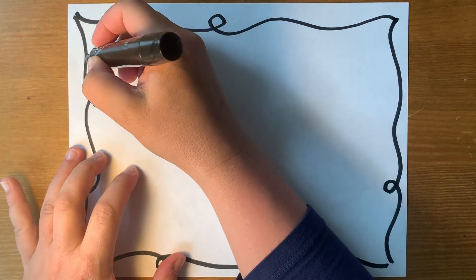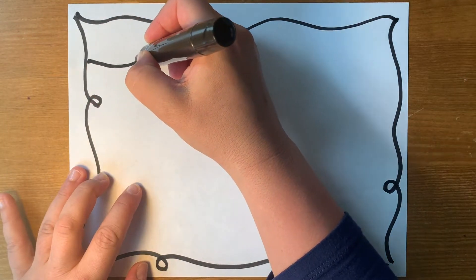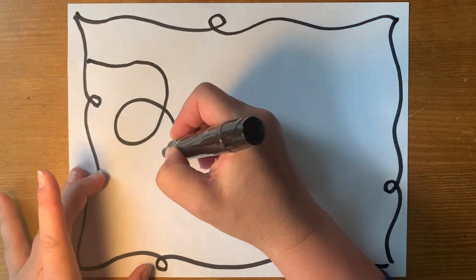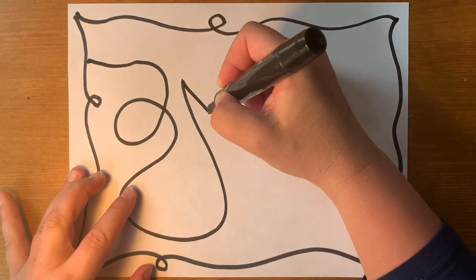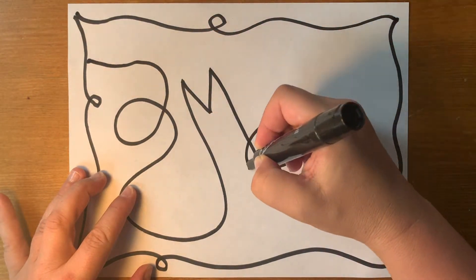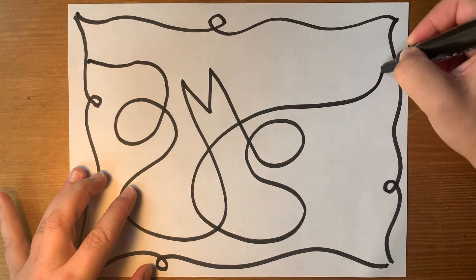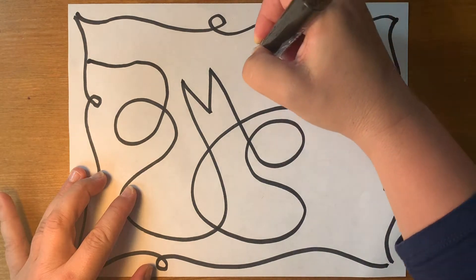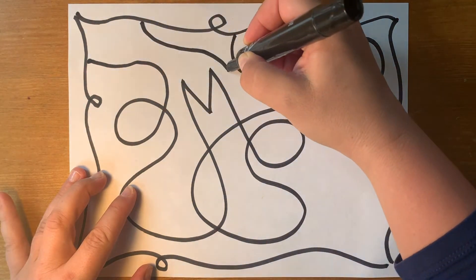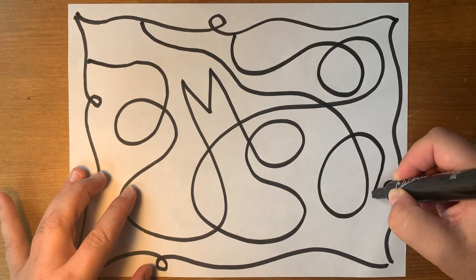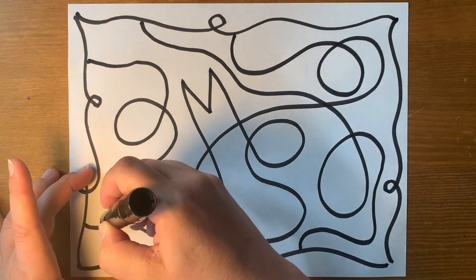Pretend that your pencil or marker is going for a walk, not a run, around your page. Make sure that it visits each corner of the page so it doesn't miss anything. Make the walk interesting by wandering around and curving the path a little. It's okay to let your path cross over itself. You'll be coloring in the shapes, so stop before the lines get too close together.